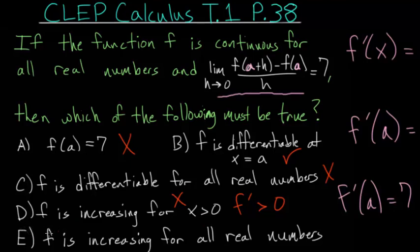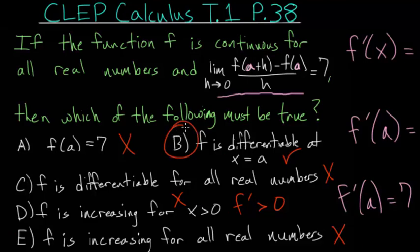For letter E: f is increasing for all real numbers. This is essentially the same argument as letter D. We know the function is increasing when x is equal to a, but that's the only value we have information about. We don't know what happens for all other values in the domain. So we do not have enough information to conclude if this is true or not. That leaves us with letter B as the only answer that must be true.